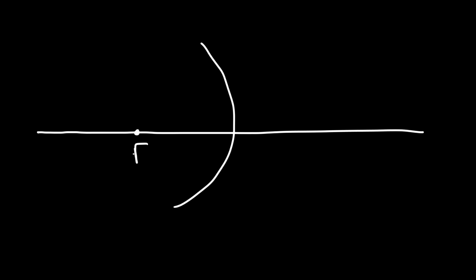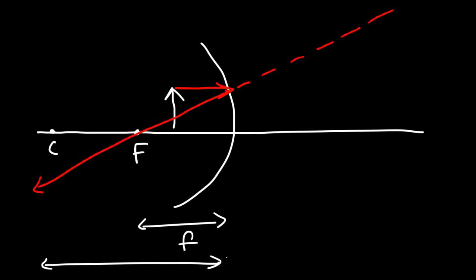Now let's look at another example using a concave mirror. Let's say this is the focal point, and this time we're going to place the object inside the focal point — that is, between the focal point and the mirror. The first ray is going to go from the object to the mirror, and then bounce back towards the focal point, with an extension drawn in this general direction. The center of curvature is located at twice the focal length — so if the focal length is 5, the radius of curvature will be 10.